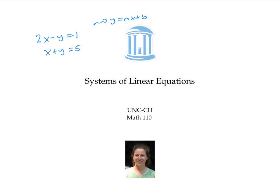A solution to a system of equations is an x value and a y value that satisfy both of the equations. For example, the ordered pair (2, 3) — that means x equals two, y equals three — is a solution to this system, because if I plug in x equals two and y equals three into the first equation, it checks out: two times two minus three equals one.